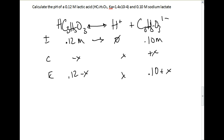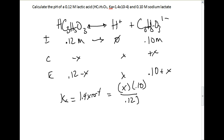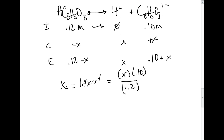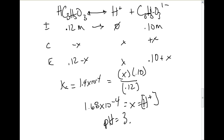Setting up the Ka expression: 1.4 × 10⁻⁴ = x(0.10 + x) / (0.12 − x). Assuming x is small, this simplifies to x × 0.10 / 0.12. Solving for x gives 1.68 × 10⁻⁴, which equals the hydrogen ion concentration. Taking the negative log: pH = −log(1.68 × 10⁻⁴) = 3.77.